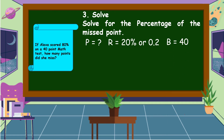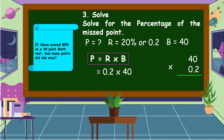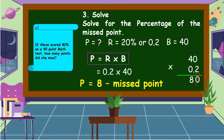The base is equal to 40. Using the formula percentage equals rate times base, we substitute: 2 tenths times 40. Multiplying: 2 × 0 = 0, 2 × 4 = 8. We count the decimal places in our factors — we only have one decimal place, so we cancel one zero in our product. Therefore, the percentage is equal to 8. This is the number of missed points of Alexa in the 40-point math test.